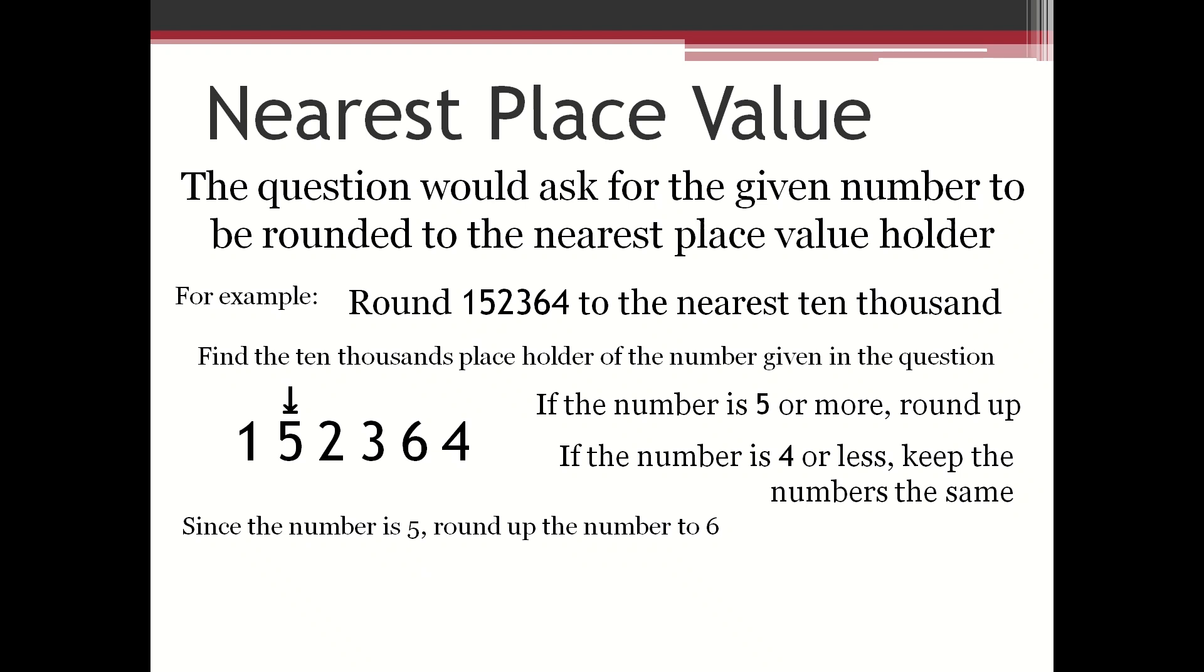Since the number is five, round the number up to six. The new number therefore would be 160,000, and the other numbers will be replaced with zero.